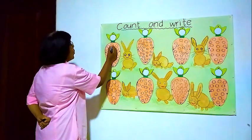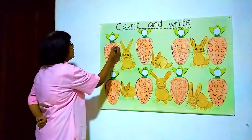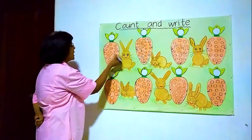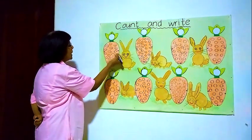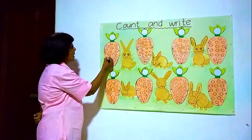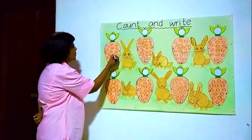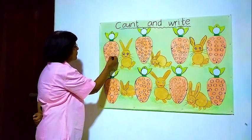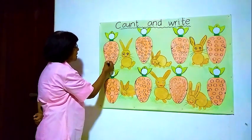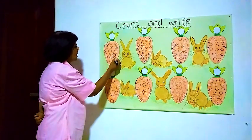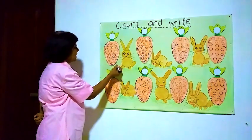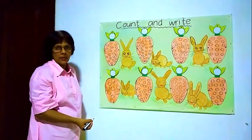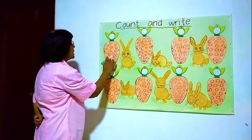We will start from here. 1, 2, 3, 4, 5, 6, 7, 8, 9, 10, 11, 12, 13, 14, 15, 16, 17, 18, 19, 20. There are 20 balls inside this carrot.